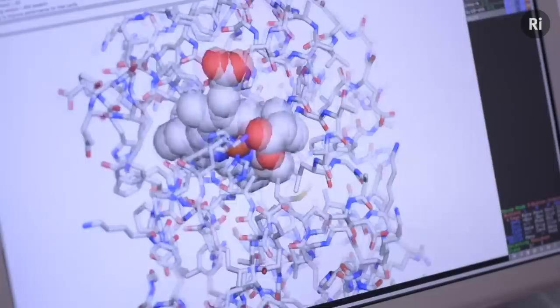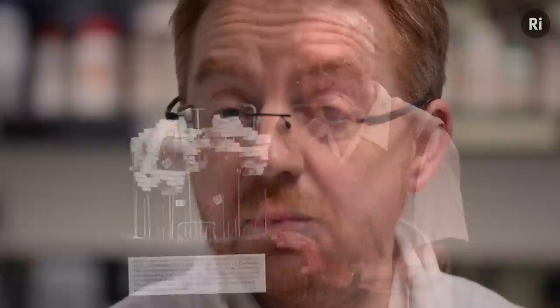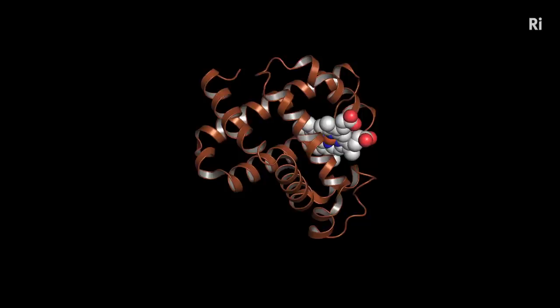One of the most interesting things about this early work was that when Max Perutz applied crystallography to study horse haemoglobin, the molecule that transports oxygen in red blood cells, he could see for the first time that it was very similar in structure to myoglobin.